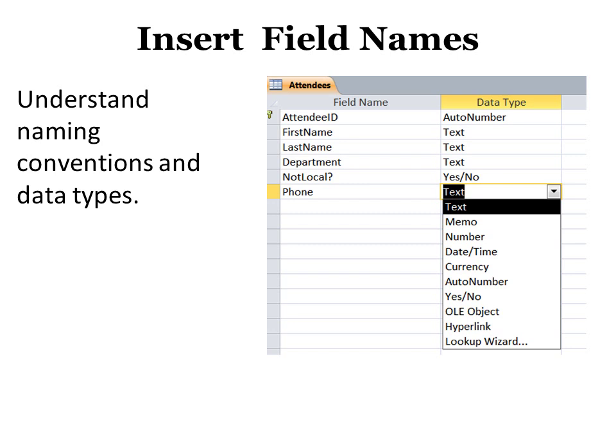You also have to choose a data type. There are many data types and many options for them — we'll cover that in a different class. By default you'll get text, but you may want something else like AutoNumber, which is a number that automatically increases.